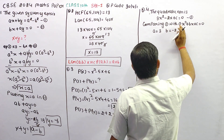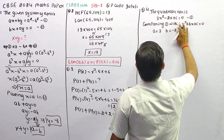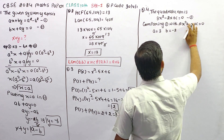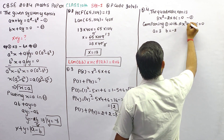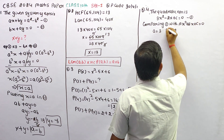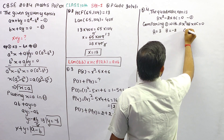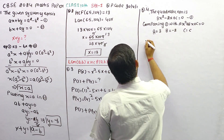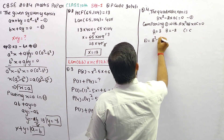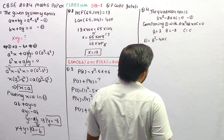अगर आप चाहें तो standard form में capital letters का use कर सकते हैं — capital A, capital B, and capital C — जबकि equation में small c है। तो discriminant जो है वो b² minus 4ac के equal होता है।